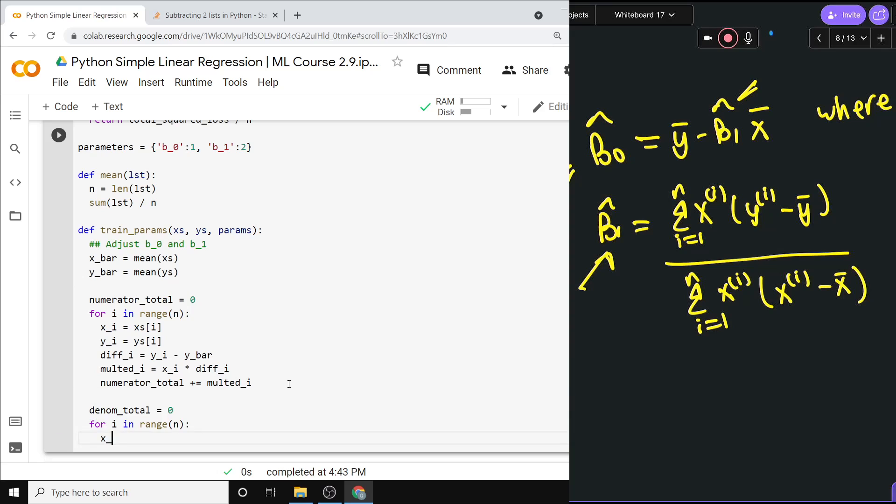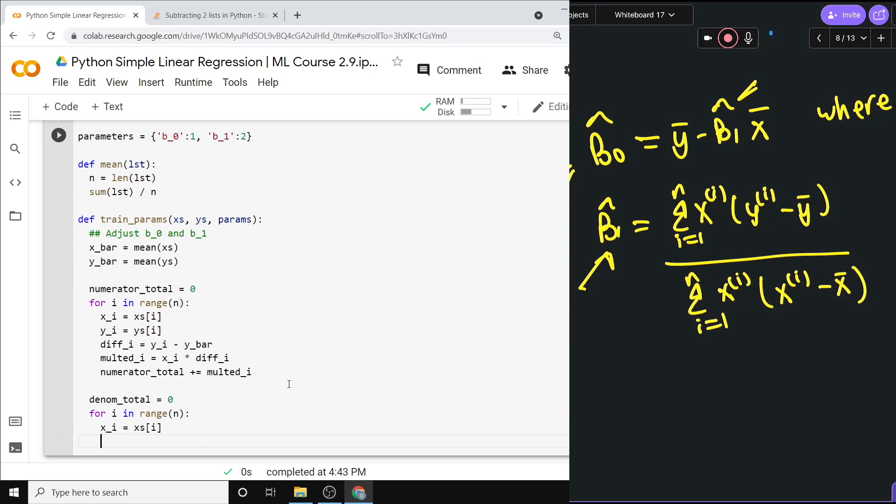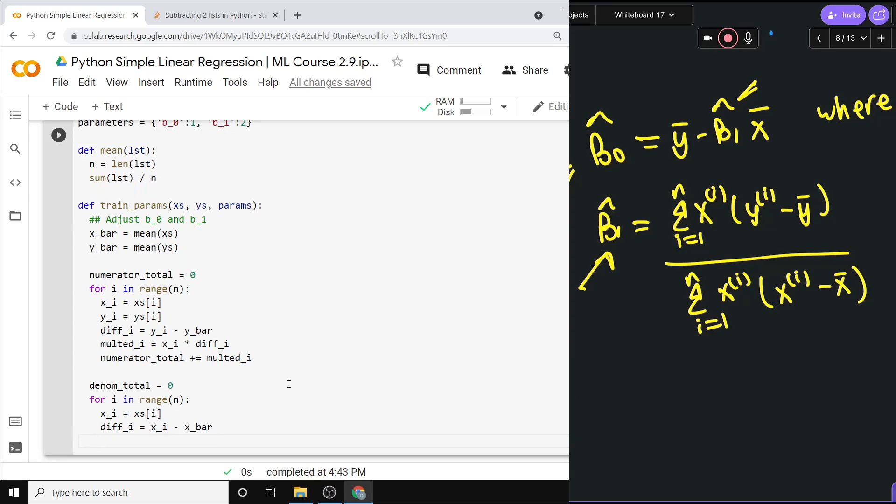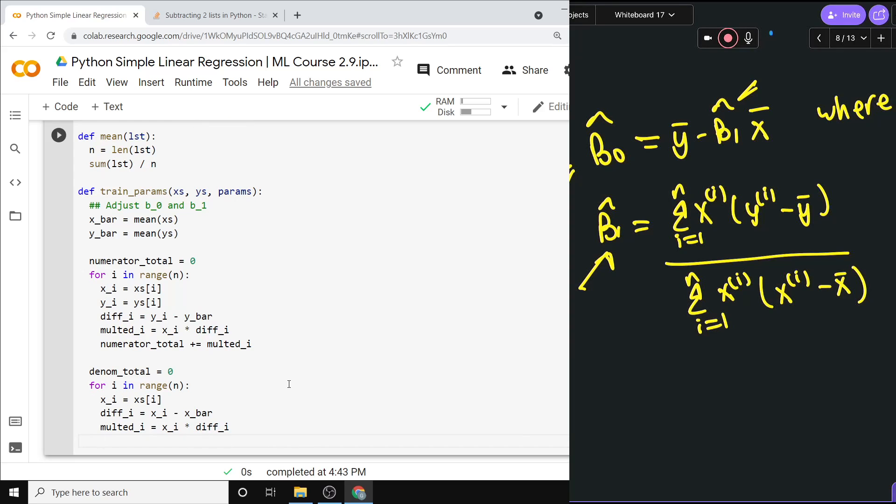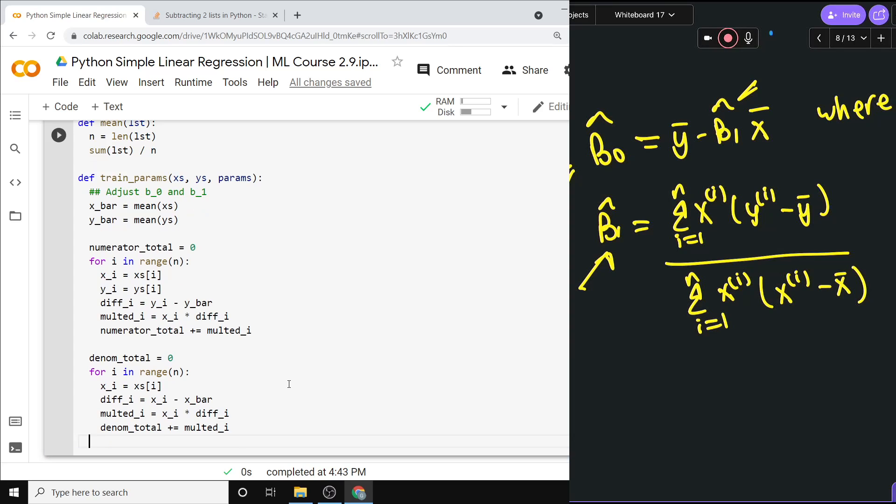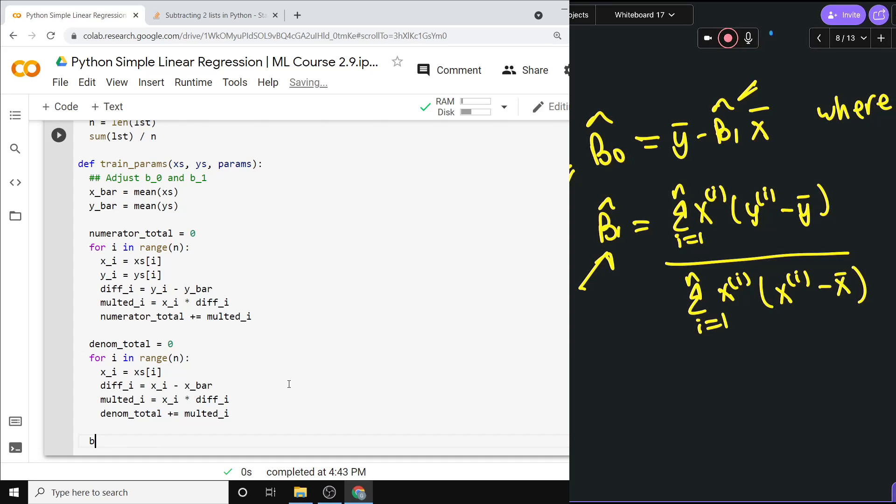We can get xi equals x's[i], and we already have x_bar so that's all that we'd actually need. So then we can do diff_i and get a different difference, but it's a difference. diff_i is equal to xi minus x_bar. And then mult_i again—different mult_i but still multiplication—mult_i is xi times diff_i. And that's the thing that we need to sum up, so we'll just do denom_total plus equals mult_i.